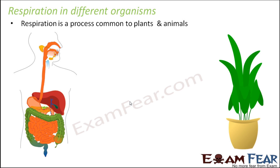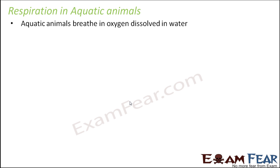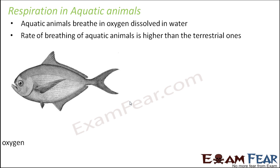Let us look at respiration in some aquatic animals. One excellent example of aquatic animals could be fishes. Fishes stay in water, so they actually need to breathe in oxygen which is present in dissolved form in water. Water contains oxygen, so basically they need to take in water and from that water they have to selectively extract the oxygen. Let us see how fishes do that.